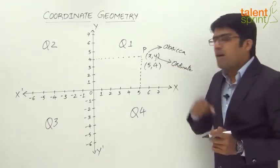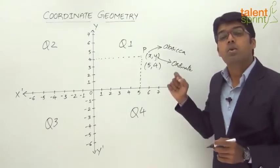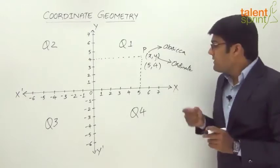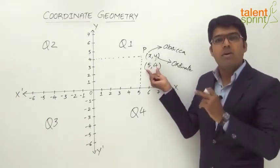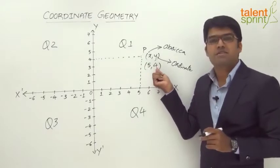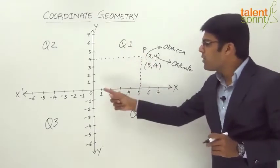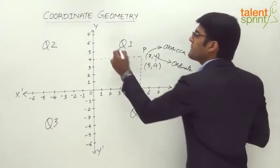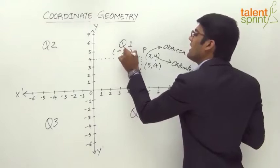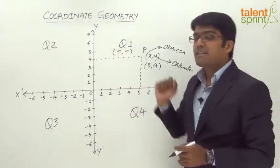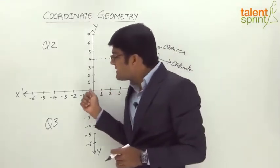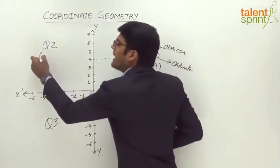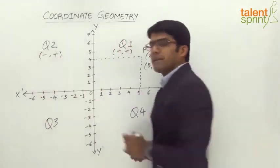This is how we can locate any point in the Cartesian coordinate system. If you observe, both the coordinates in quadrant 1 represent positive values because quadrant 1 is described by the positive x-axis and positive y-axis. So here the ordered pair will always have positive values — both values are positive. In quadrant 2, since it is described by negative x-axis and positive y-axis, the ordered pair will have negative and positive values respectively.